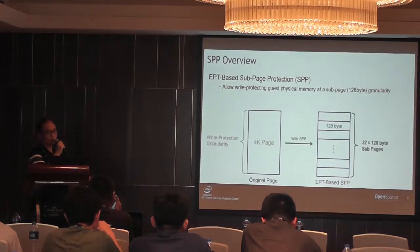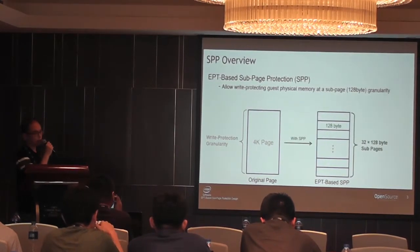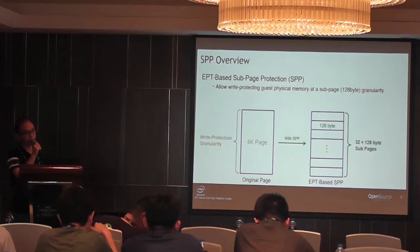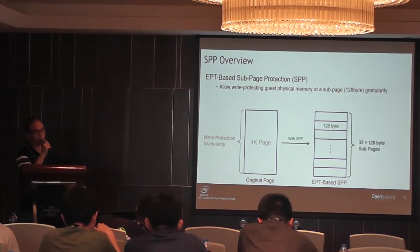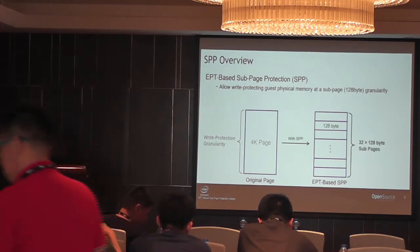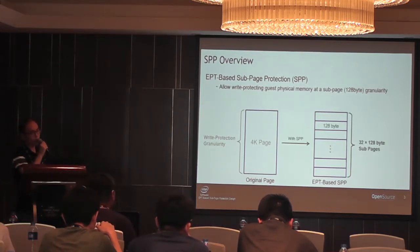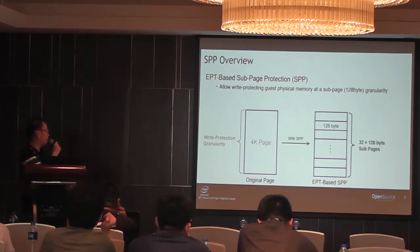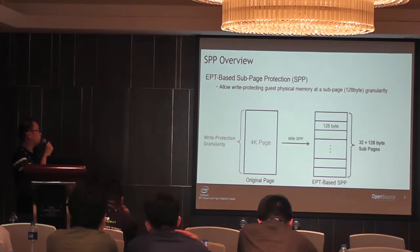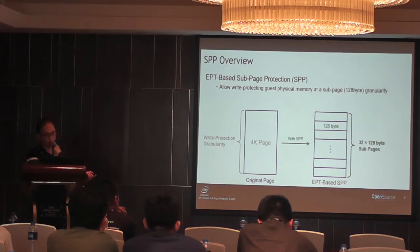In this slide, the figures show us our original 4K page. 4K is the minimal granularity to control the page — it is readable or read-only. If we use SPP, it will allow write protection for the whole 4K page, and it will divide the 4K page into 32 x 128-byte sub-pages, as shown here.